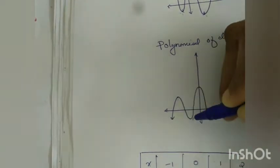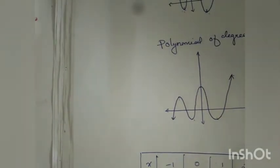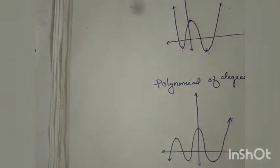In the case of a fifth degree polynomial, there are 6 points. We can see that if there are n plus 1 points, we can construct a polynomial of nth order.